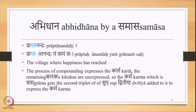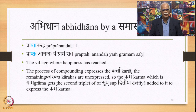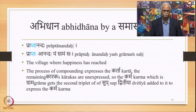Then we have Abhidhana by a Samasa — a compound. The example is 'Praptanandaha,' meaning 'Praptah anandah yam gramam sah' — the village where happiness has reached. The process of compounding here expresses the Karta. The remaining Karakas are unexpressed, so Karma, which is Grama, gets the second triplet of Sup, Dvitiya, added to it to express the Karma. This is how Samasa expresses the Karaka.